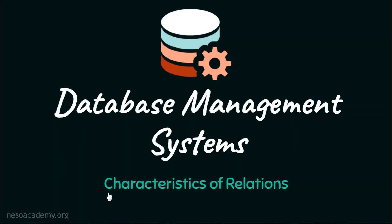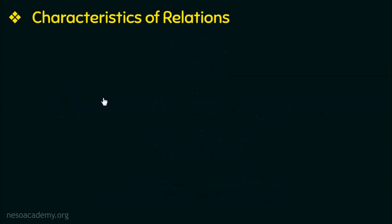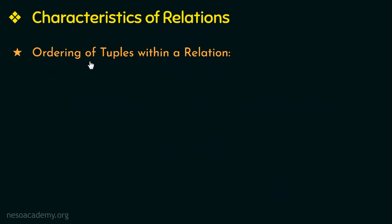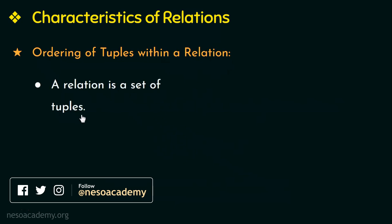Hello everyone and welcome back. In this video we are going to see the characteristics of relations. The first characteristic of a relation is ordering of tuples within a relation. In the previous video we learnt that a table is also called a relation, and a relation or a table is a set of tuples or rows.